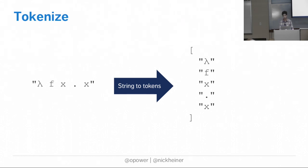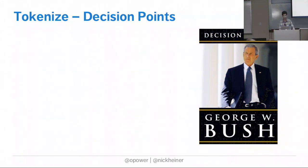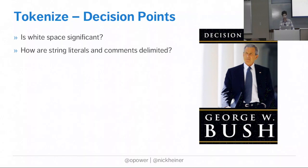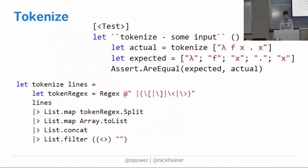The first phase is tokenizing. We take in the language as a string and emit a list of strings where each member is an atomically meaningful unit - breaking up the program into its smaller chunks of meaning. As language designers we have decisions to make: is whitespace significant? Are we going to emit tokens for whitespace or ignore them? How are string literals and comments emitted? The tokenizer has different rules if it's in a comment - do you have certain symbols to the end of the line or open and close delimiters? The main approach is using a regular expression and splitting the input wherever there's a match.